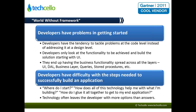What happens is developers end up tackling this problem at a code level instead of at a design level. And of course the developers have their own priorities, so they try to address it at a different level. You also end up having the business functionality spread across all the layers, so instead of taking the layered approach, everybody tries to solve it in the way they know, and hence you end up having code which is totally messed up.